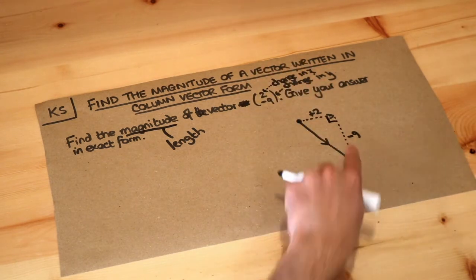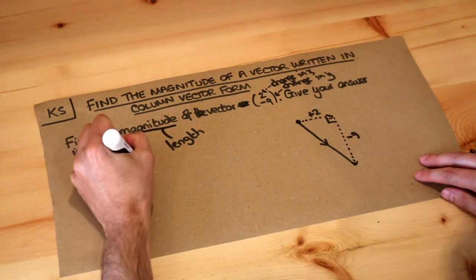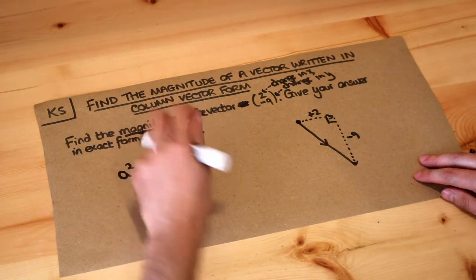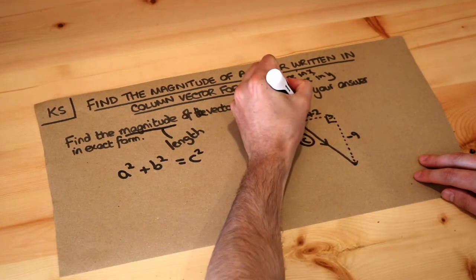If I put a little right angle there I can just use Pythagoras using these lengths. So remember Pythagoras theorem: a squared plus b squared equals c squared, where c is the hypotenuse. So if this is the hypotenuse here and this is the a and the b...